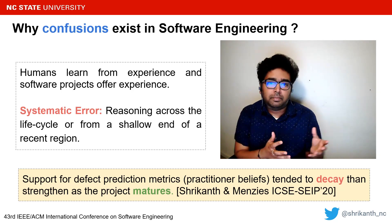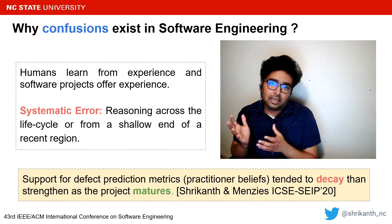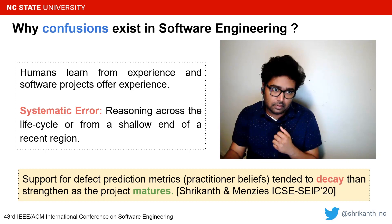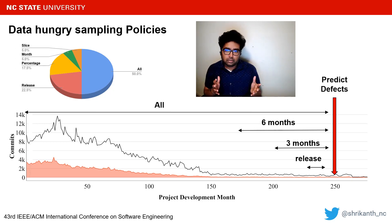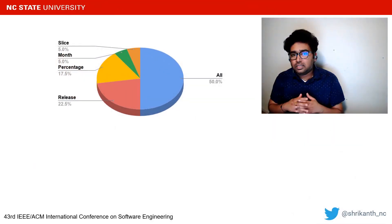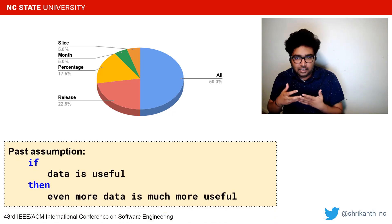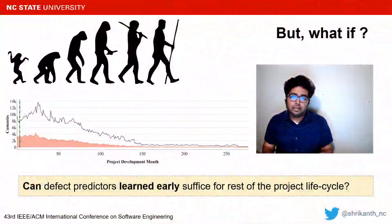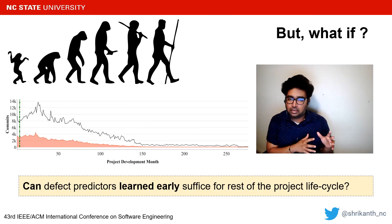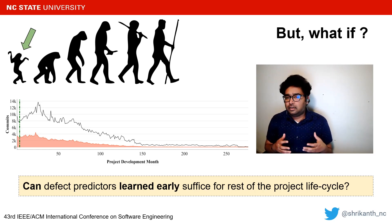Some data-hungry defect prediction methods build a machine learning model using all past software commits, or from the recent three to six months of commits, or just from the recent release. Over the years, we've held the assumption that if data is useful, then even more data is much more useful. But if most defects occur very early in the lifecycle, then models learned from the first few months of data should perform just as well as any data-hungry sampling method.